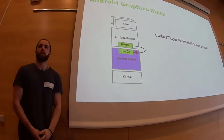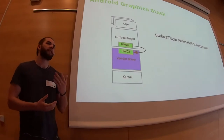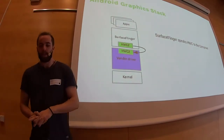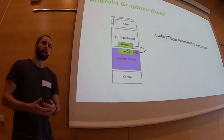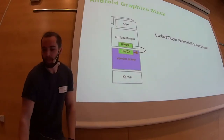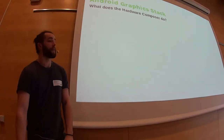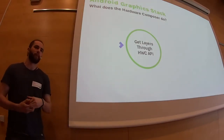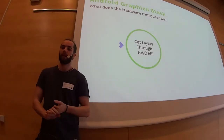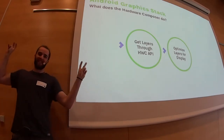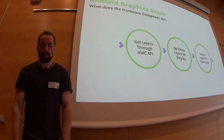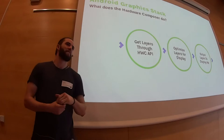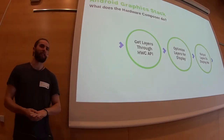SurfaceFlinger does this by juggling a bunch of buffers and communicates these buffers to the hardware using a protocol called HWC. HWC is then used to talk to the actual hardware in whatever way the hardware prefers. The hardware composer receives a bunch of layers from SurfaceFlinger — as many layers as you want — then optimizes them and sends them to the display hardware. This is where things get complicated, because when we output to actual display hardware there are hard restrictions.